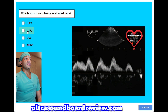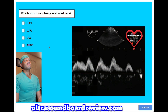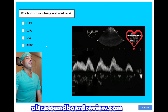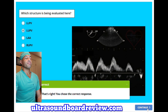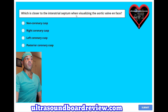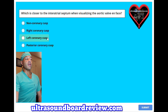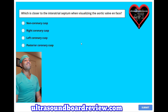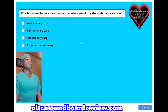A. Left lower pulmonary vein. B. Left upper pulmonary vein. C. Left atrial appendage. Or D. Right upper pulmonary vein. Which is closer to the interatrial septum when visualized in the aortic valve en face view? A. Non-coronary cusp. B. Right coronary cusp. C. Left coronary cusp. Or D. Posterior coronary cusp. The answer is A — the non-coronary cusp.